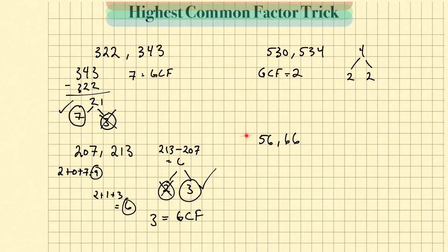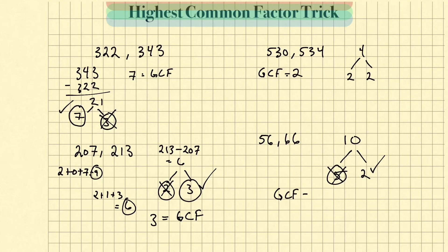Last one: 56 and 66. First I take the difference — the difference is 10. I can see that neither one of these numbers is divisible by 10. So I need to break this further down into its factors. I know that neither 56 nor 66 are divisible by 5 because they do not end in a 5 or a 0, so I'll cross that out. I can see both numbers are divisible by 2, so the greatest common factor equals 2.